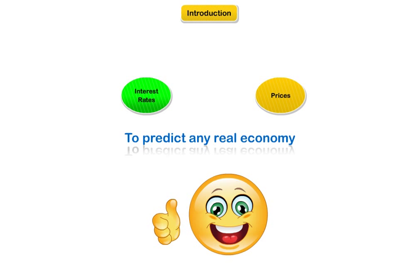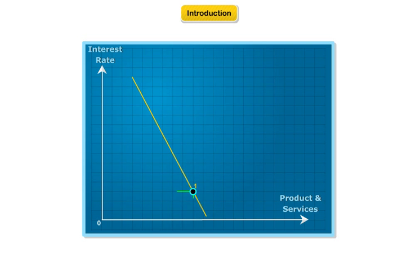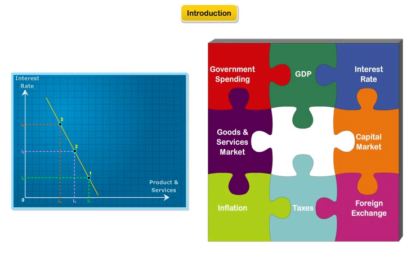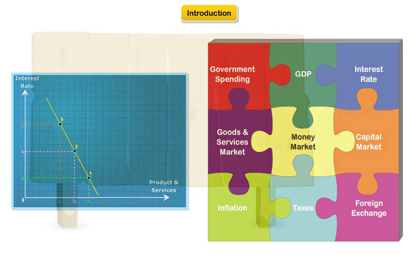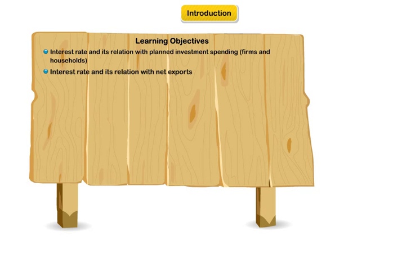In this set of modules, we would see how the product and services equilibrium changes with changes in interest rate. We would also introduce the money markets piece of the ISLM analysis. The learning objectives of this module are: interest rate and its relation with planned investment spending by firms and households; interest rate and its relation with net exports; derivation of the IS curve; and equilibrium in the goods market.